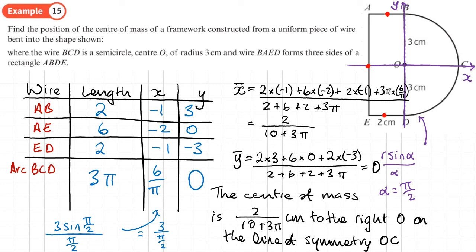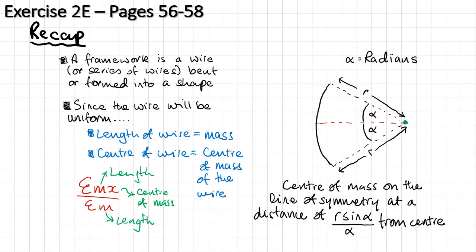The center of mass is 2/(10+3π) centimetres to the right of O, on the line of symmetry along the x-axis. You should now be able to do exercise 2E on pages 56 to 58 of the textbook.